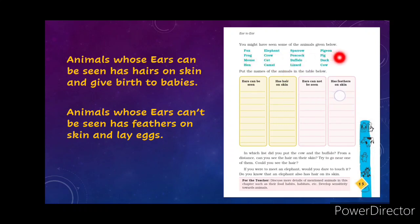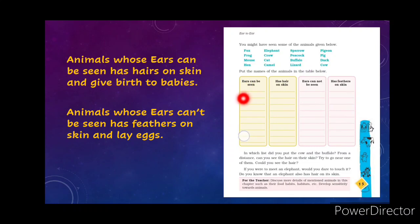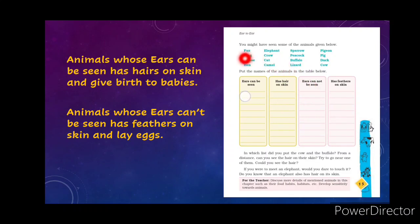Here you can see there are some animal names given and there are four boxes which you have to fill up. I will help you with how to fill it up and the rest you have to do yourself. Take the example of the fox — fox ears can be seen, and fox has hair on skin, so you can write their name there. Fox ears cannot be seen? No, fox ears can be seen, that's why we wrote it there.